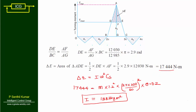Applying ΔE equals I·ω²·CS, with ΔE equals 17444 Nm, I equals M·K², K equals 1.2 m, ω equals 2π×185/60 rad/s, and CS equals 0.02. Rearranging and solving, we get I equals 1382 kg·m². This is how we find the moment of inertia of a flywheel for an IC engine from its turning moment diagram. Thank you.